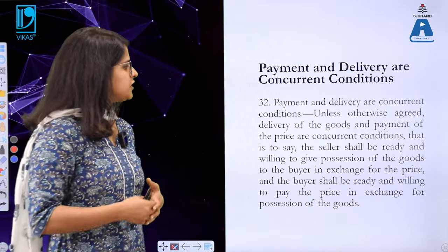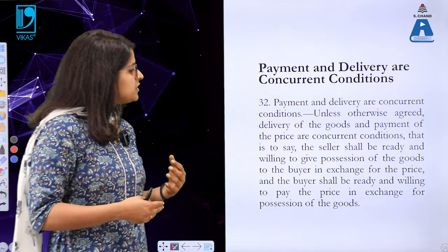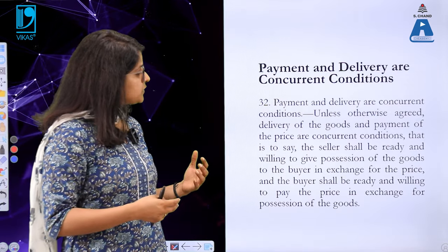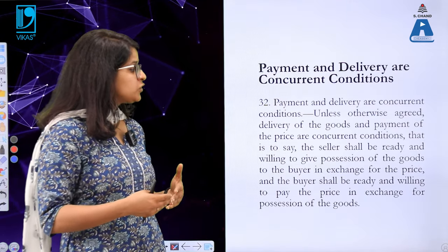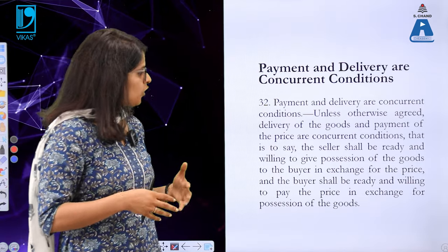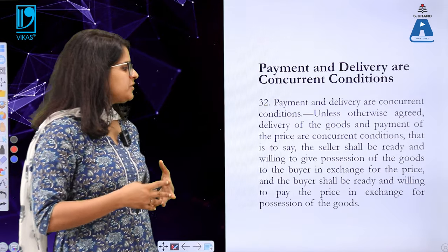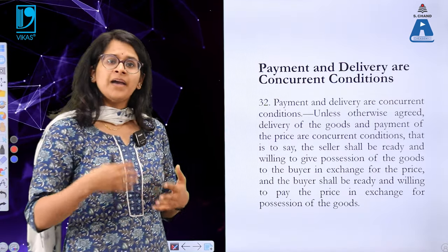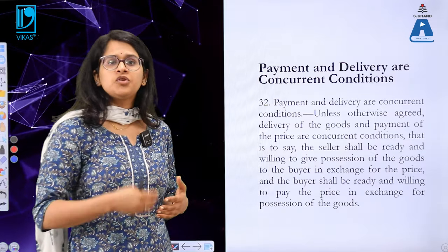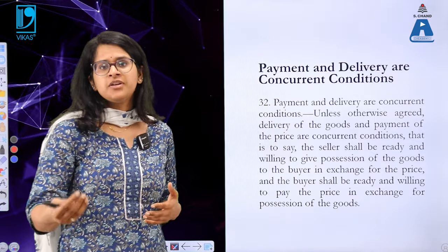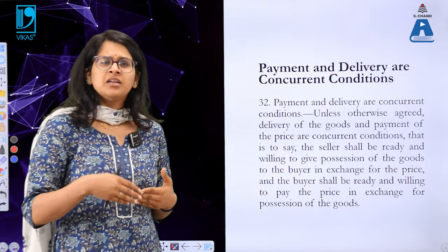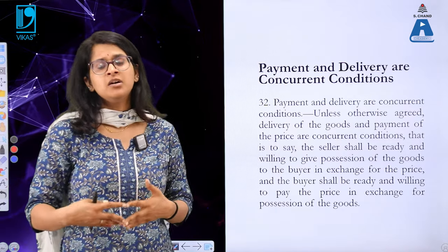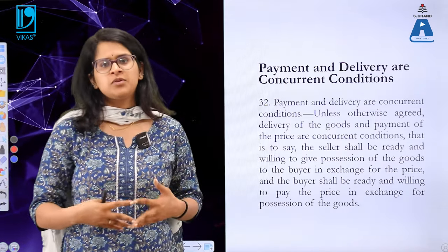The text of Section 32 states that unless otherwise agreed, delivery of the goods and payment of the price are concurrent conditions — that is to say, the seller shall be ready and willing to give possession of the goods to the buyer in exchange for the price, and the buyer shall be ready and willing to pay the price in exchange for possession of the goods.